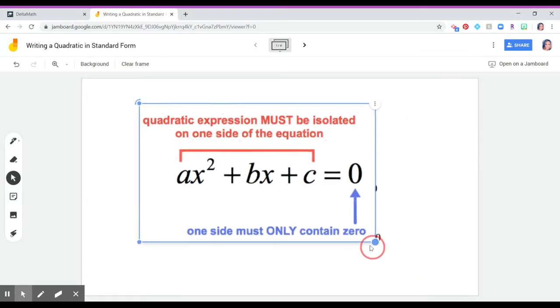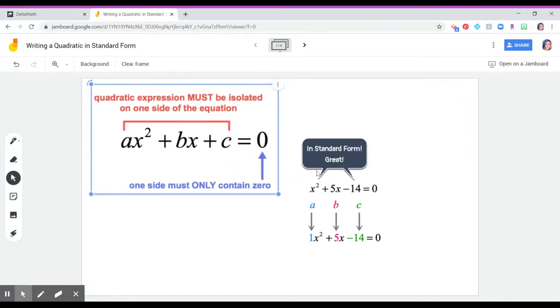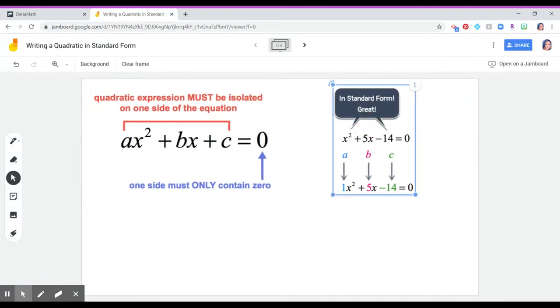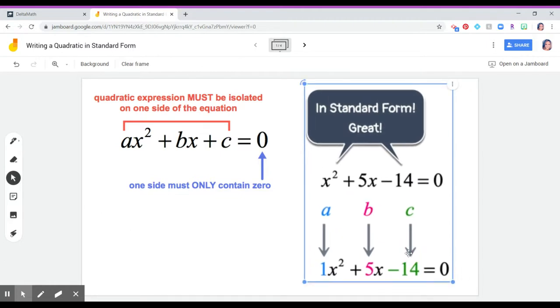So you can take a look at what that means. If we had an example like this, it's already saying it's in standard form, but let's just take a look. I have x squared plus 5x minus 14 equals zero. This is our goal.